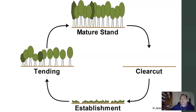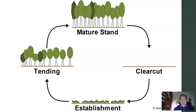Here's a basic silvicultural cycle for a clear cut. You start with a mature stand of trees, cut all of them, then plant and manage the site. You get your trees established and tend them, making sure they come up and become a mature stand again, and then you start the whole cycle over. That's the silvicultural cycle most people are familiar with, but there are a few different ways to do it that we'll talk about later in the semester.